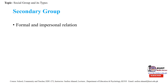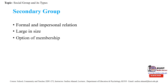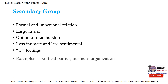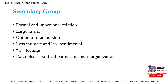In secondary groups, relations are formal and impersonal. They are usually large in size and options of membership exist. They are less intimate and less sentimental, characterized by an 'I-feeling' rather than a 'we-feeling.' An example is political parties.